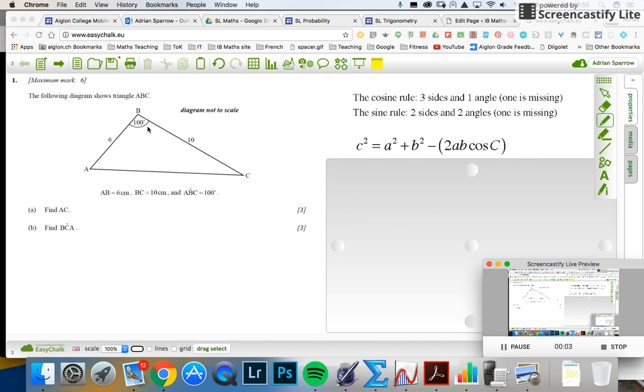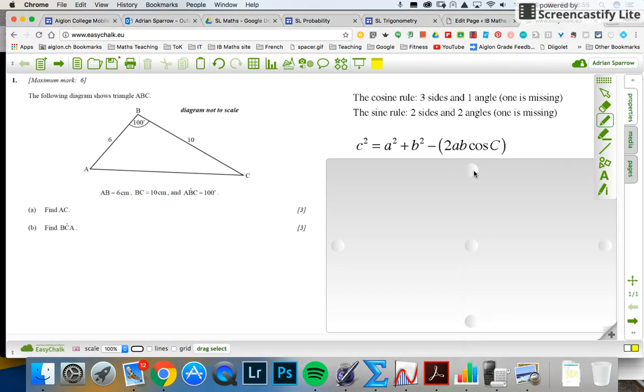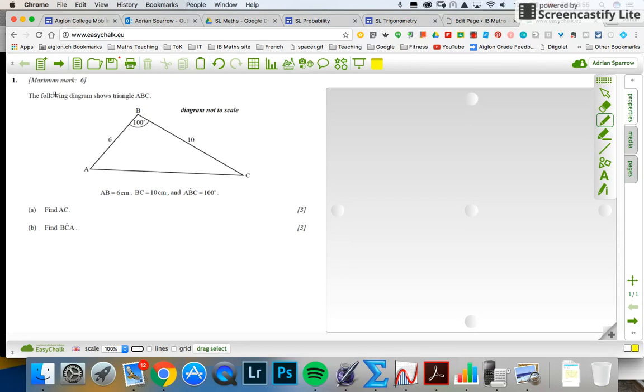This is a standard level question and it's going to be about cosine and sine rule. So what I've got here is a non-right-angle triangle and I've got to find A to C. So A to C is here, so I'm just going to label that with an X.